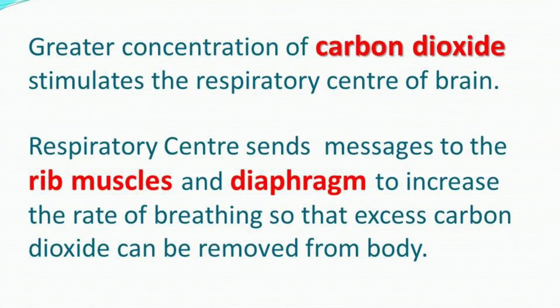अब ये जो breathing rate वाला mechanism है, ये किस तरह control होगा — ये depend करता है carbon dioxide की concentration पर। ये check करता है कि हमारी body में breathing rate slow है या fast। हमारी body में मौजूद जो blood है, उसमें जितनी भी carbon dioxide की concentration है, अगर वो increase होती जाएगी, तो हमारे brain में मौजूद जो sensor है वो उसको detect करेंगे और Rib muscles को message देंगे कि contract करना शुरू कर दें। ये सारा process तब ही perform होता है जब body में carbon dioxide की concentration increase होना शुरू हो।